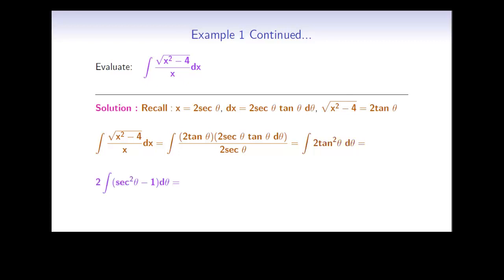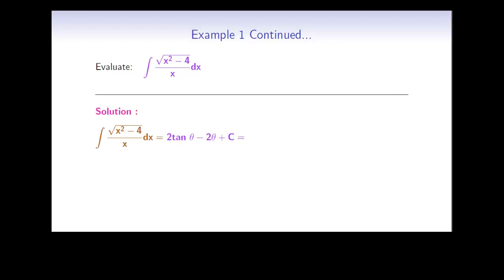We take the constant 2 out front of the integral and use the trigonometric identity to simplify tan² theta as secant² theta minus 1, since each of these is easier to integrate. We split this into two integrals: the integral of secant² theta is tan theta, and the integral of 2 dθ is just 2 theta. So the integral equals 2 tan theta minus 2 theta plus C.